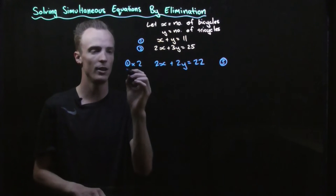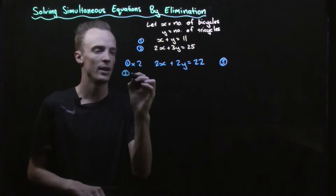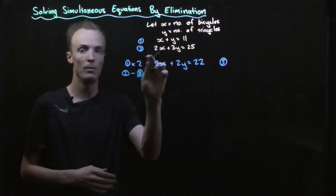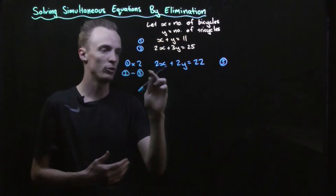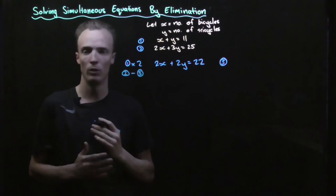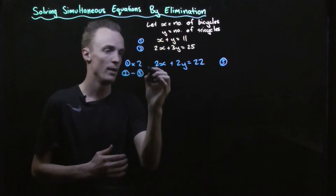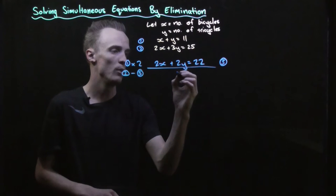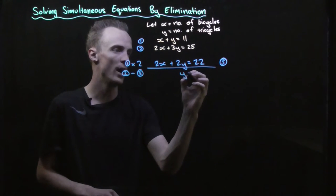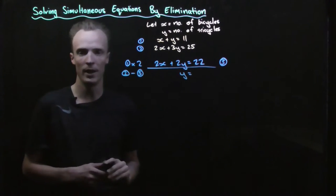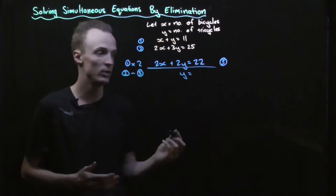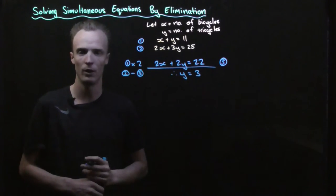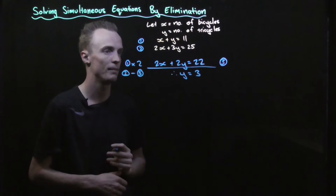I'm going to take equation 2 and subtract equation 3 from it. With them lined up, 2x subtract 2x eliminates the x terms. Then 3y subtract 2y is 1y, equal to 25 subtract 22, which is 3. Therefore our y value is equal to 3.